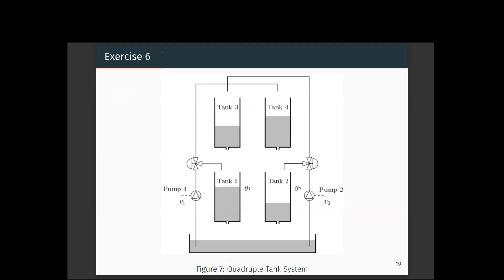We have to simultaneously control both pumps so that the liquid level is maintained. Another way is to fix pump one and pump two at certain voltages and control the valve positions of valve one and valve two. The controlled variable is the height of tank one and the height of tank two, and the manipulated variable is either the voltages given to pump one and pump two, or the valve positions of valve one and valve two.